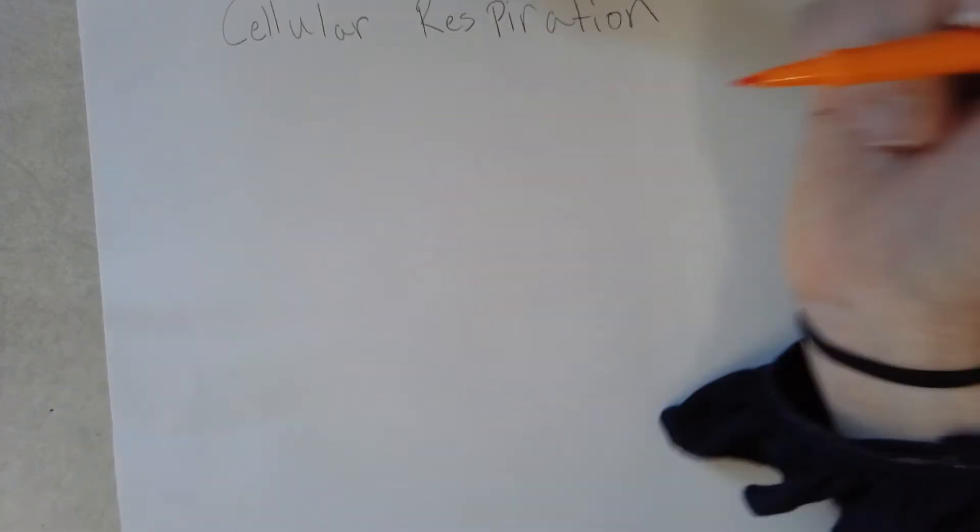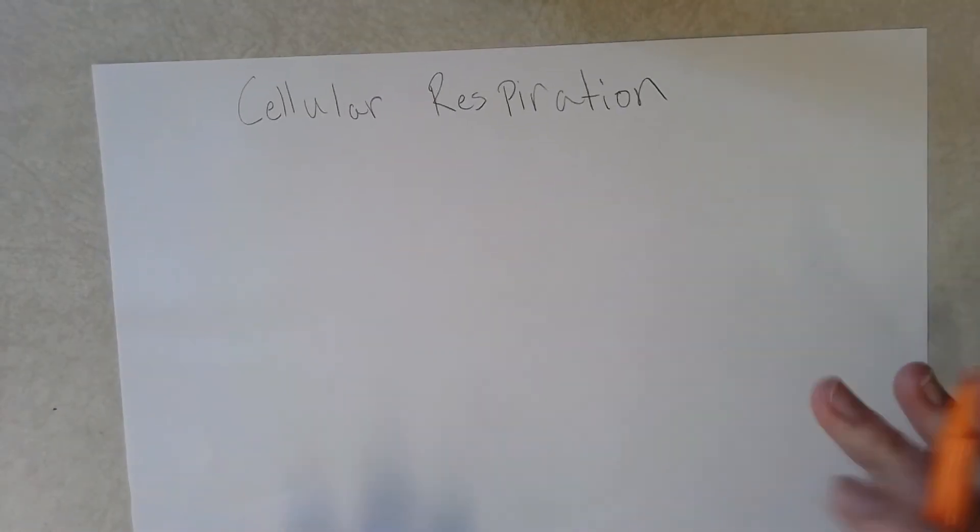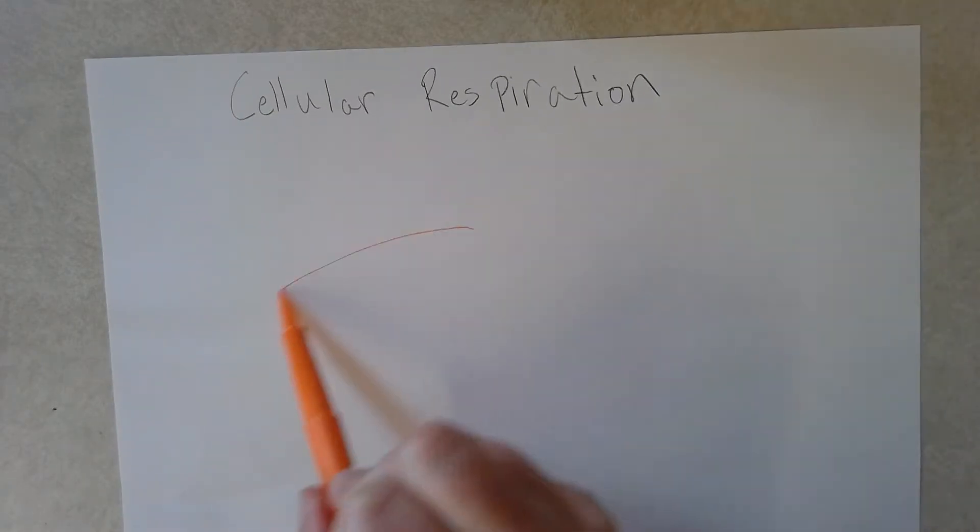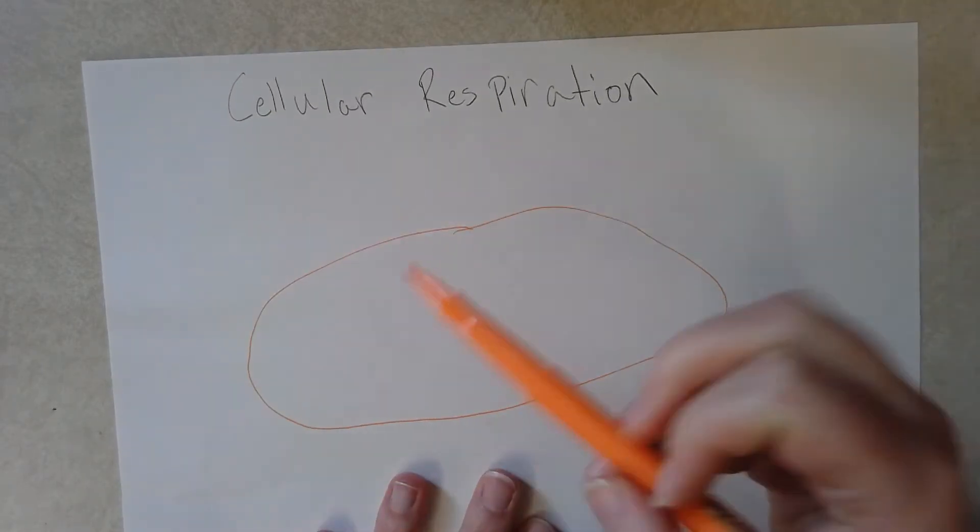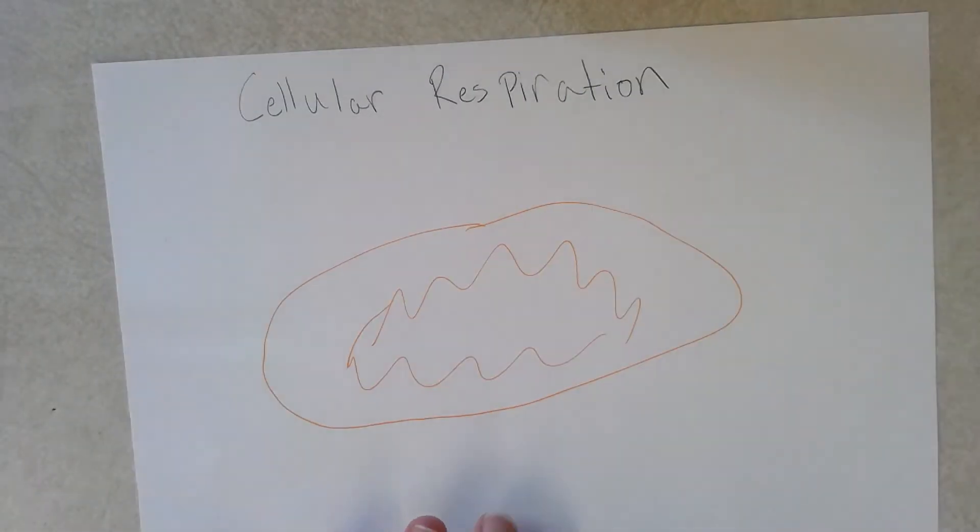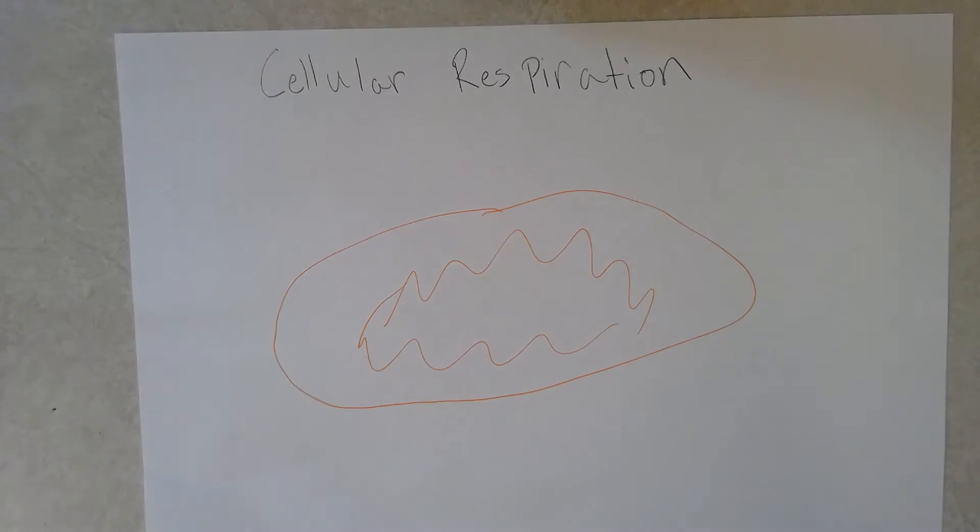All right, so this is the review for cellular respiration. The cell organelle that is responsible for cellular respiration is the mitochondria, so I'll just draw a little version of a mitochondria here. And the main chemical equation for cellular respiration is...